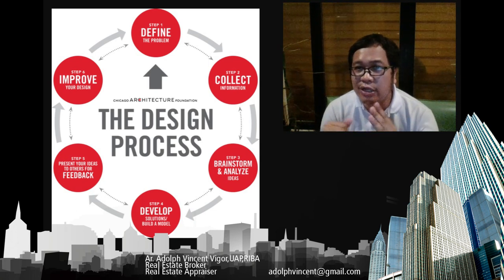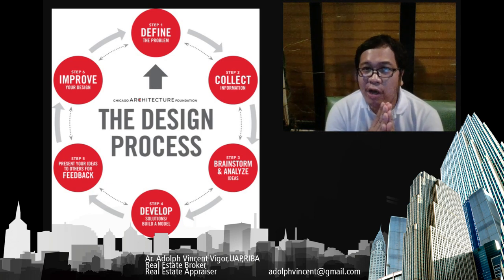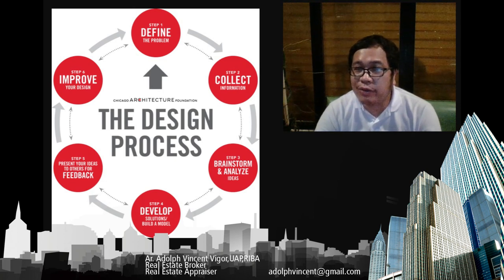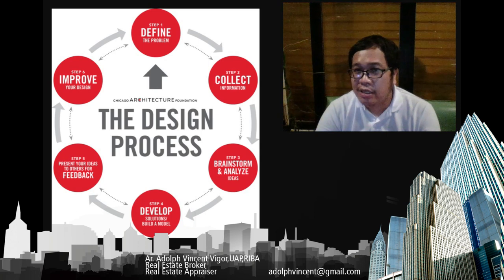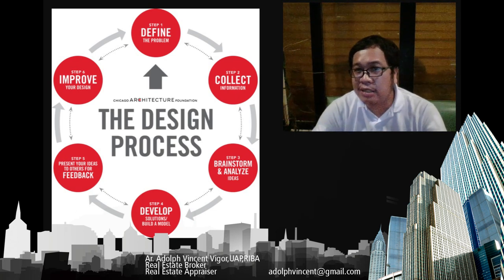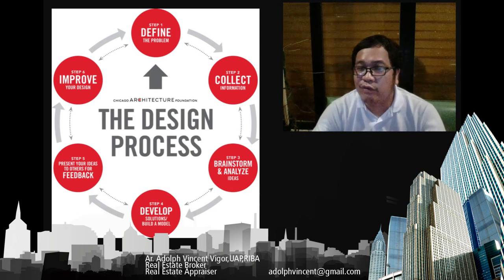Step one is to define the problem. You have to understand and do research on the type of building or structure you'll be designing. For example, if I ask you to design a subdivision, first things first is to research the minimum requirements as per the codes — you have to look into the NBC (National Building Code), the HLURB guidelines, and some other laws that govern the design of subdivisions.